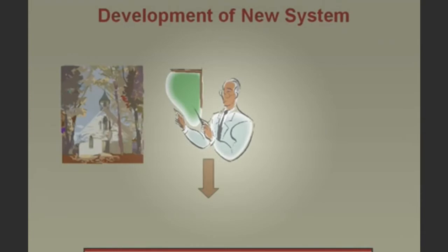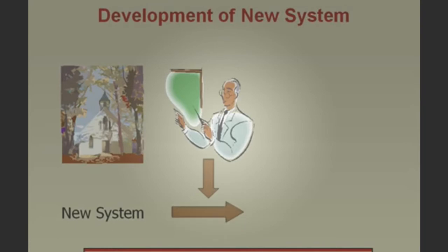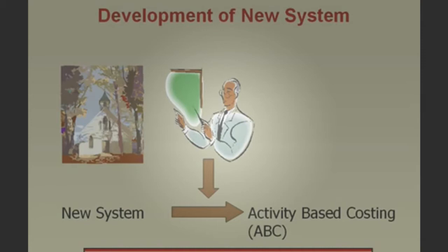Around 1985, Robert Kaplan from Harvard University came up with a new system to solve this problem. Working from his house in the rural countryside, he developed a new system called activity-based costing. Kaplan was a very modest individual and didn't call the new system by his name. He called it activity-based costing, and now it goes by the acronym ABC.